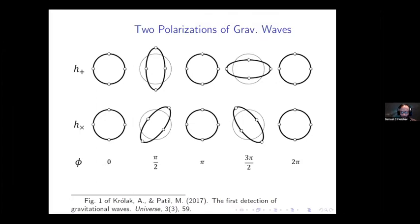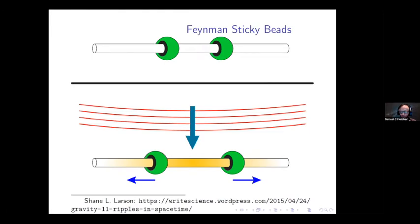One interesting thing about the history of this is that it took quite a long time for the relativity community to reach consensus. For a long time there was discussion about whether gravitational waves were mere coordinate phenomena — that is, whether the oscillations described were just things appearing in our description of the world rather than being real changes in matter. One of the arguments that convinced folks in the mid-century renaissance of general relativity was developed by Herman Bondi and independently by Richard Feynman, sometimes called the Feynman sticky bead argument.